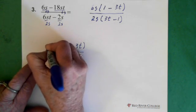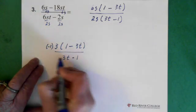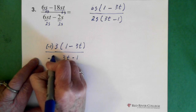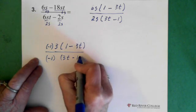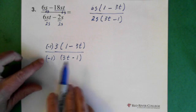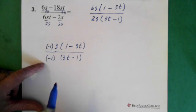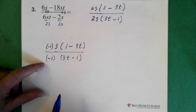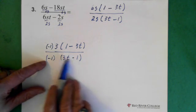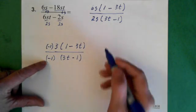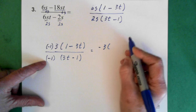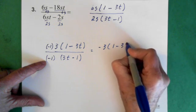I multiply the top by minus 1, and I multiply the bottom by minus 1. Now we only need to change one of them. There's no point in changing them both because we'll have the same problem. So I'm going to change the one in the denominator. I'm going to leave the top as minus 3, 1 minus 3t.